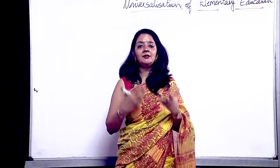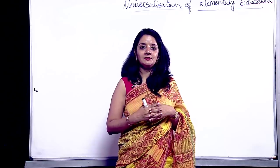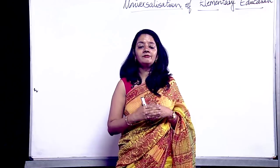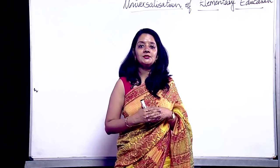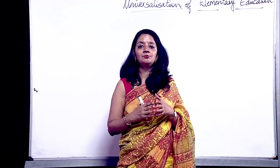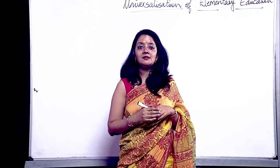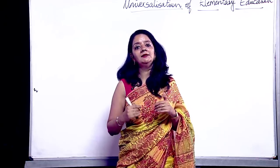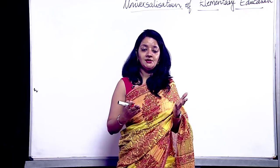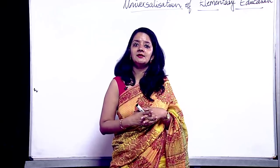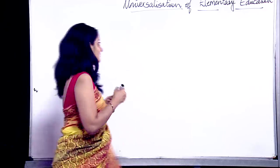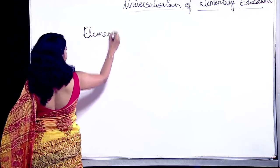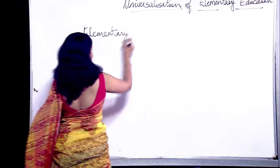Let's first understand what exactly is elementary education in India and how the school stages are divided in India. The first stage is the pre-school, which is for students in the age group of three to six years. Next comes the elementary level, which is divided into two parts: primary and upper primary. The next one is secondary and the last one is the higher secondary level. So the elementary level of education is divided into two parts.